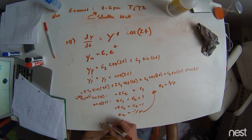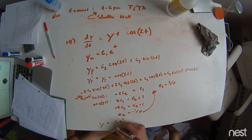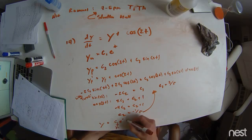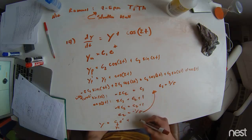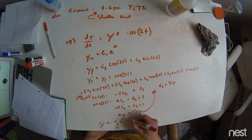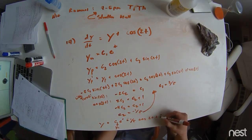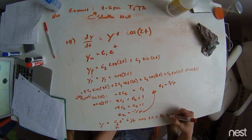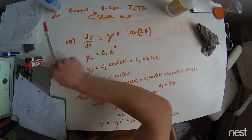We now have all the coefficients we can solve for without an initial condition. We have c1 e to the t — this is our y homogeneous. And then we have our particular solution: c2 is negative one fifth, so we put that first — negative one fifth cosine of 2t plus two fifths sine of 2t. And that is your solution, my friends. Thank you.